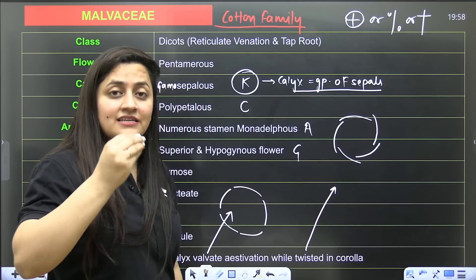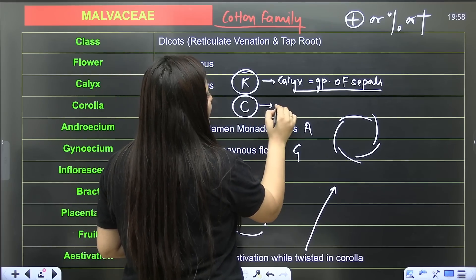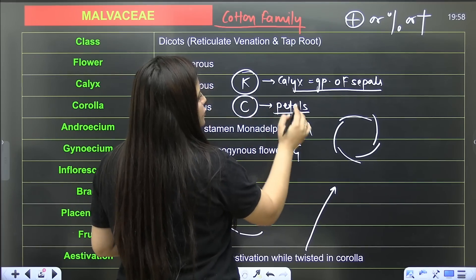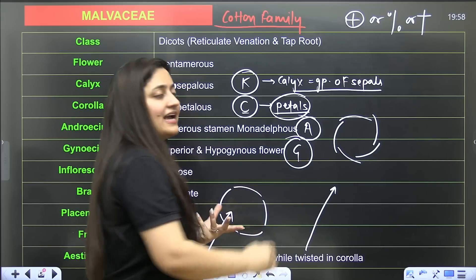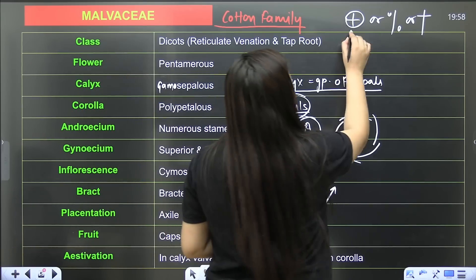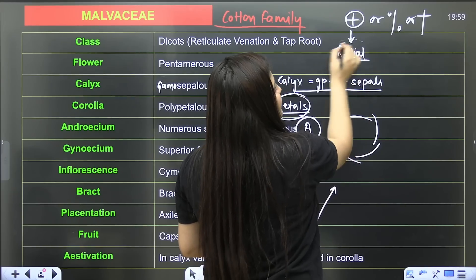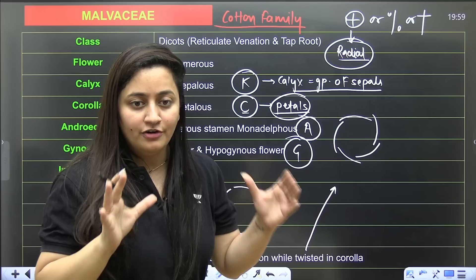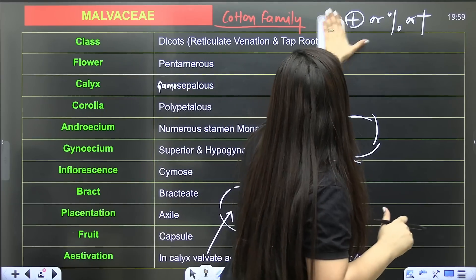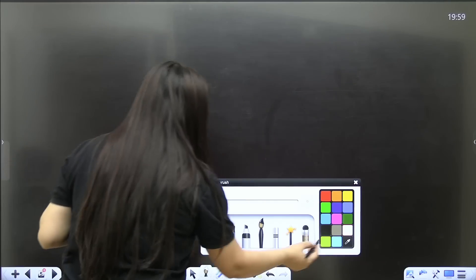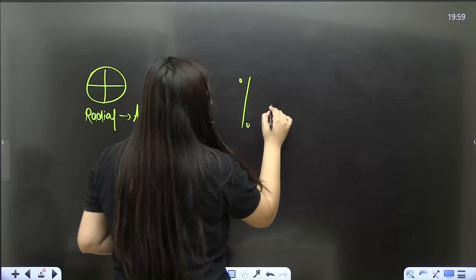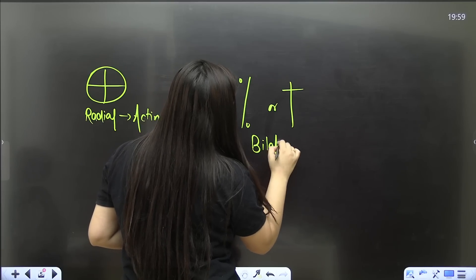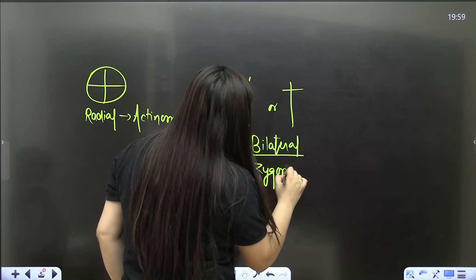C means corolla — basically the group of petals. A means androecium — group of stamens. G means gynoecium — group of pistils or carpels. When you see the circular star-like symbol, it indicates radial symmetry of the flower, meaning the flower is actinomorphic. If you see the arrow-like symbol instead, it indicates bilateral symmetry — the flower is zygomorphic.